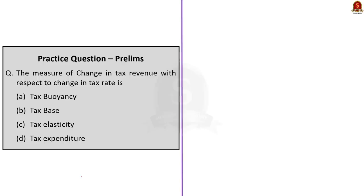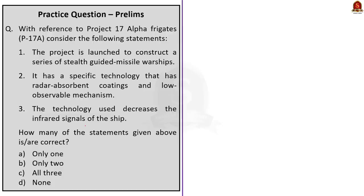Moving on to the next question: the measure of change in tax revenue with respect to change in tax rate is option C — tax elasticity. This we saw in the discussion itself.